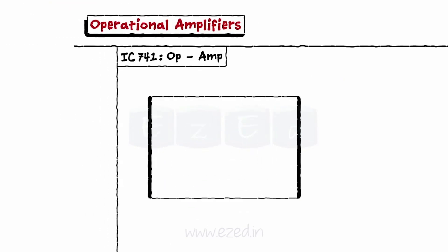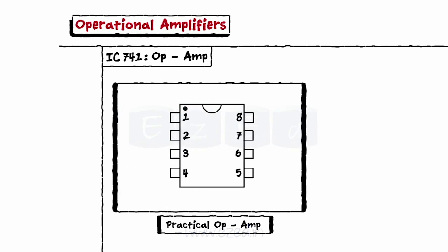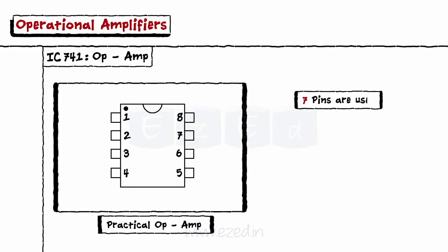The practical form of an op amp is an IC with 8 pins numbered from 1 to 8. The black dot on the left side represents that we must start counting the pins from that dot serially. Out of those 8 pins, only 7 pins are used.